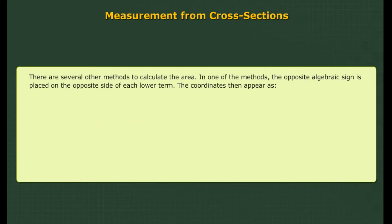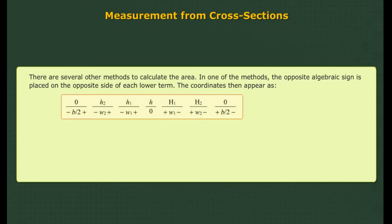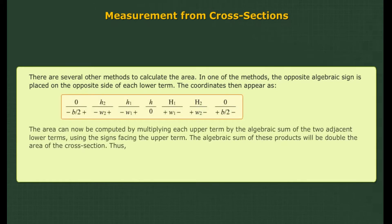There are several other methods to calculate the area. In one method, the opposite algebraic sign is placed on the opposite side of each lower term. The area can then be computed by multiplying each upper term by the algebraic sum of the two adjacent lower terms using the signs facing the upper term. The algebraic sum of these products will be double the area of the cross section.